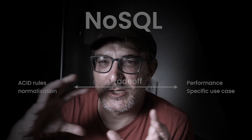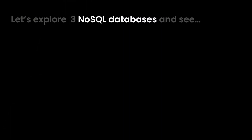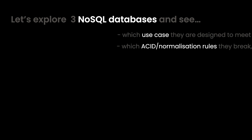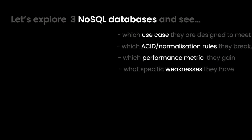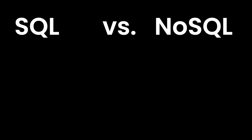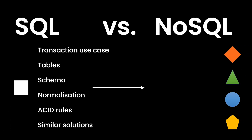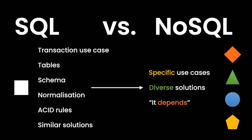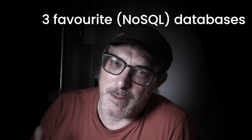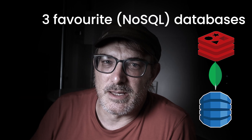That's the best angle from which to understand the differences between NoSQL and SQL databases. We'll explore which use case each database was designed to meet, which ACID or normalization rules they break, which performance metrics they gain by doing so, and what specific weaknesses they have. NoSQL databases are not a monolithic, homogenous group like SQL databases are, so I'll cover three favorites in depth: Redis, MongoDB, and DynamoDB, plus some honorable mentions.